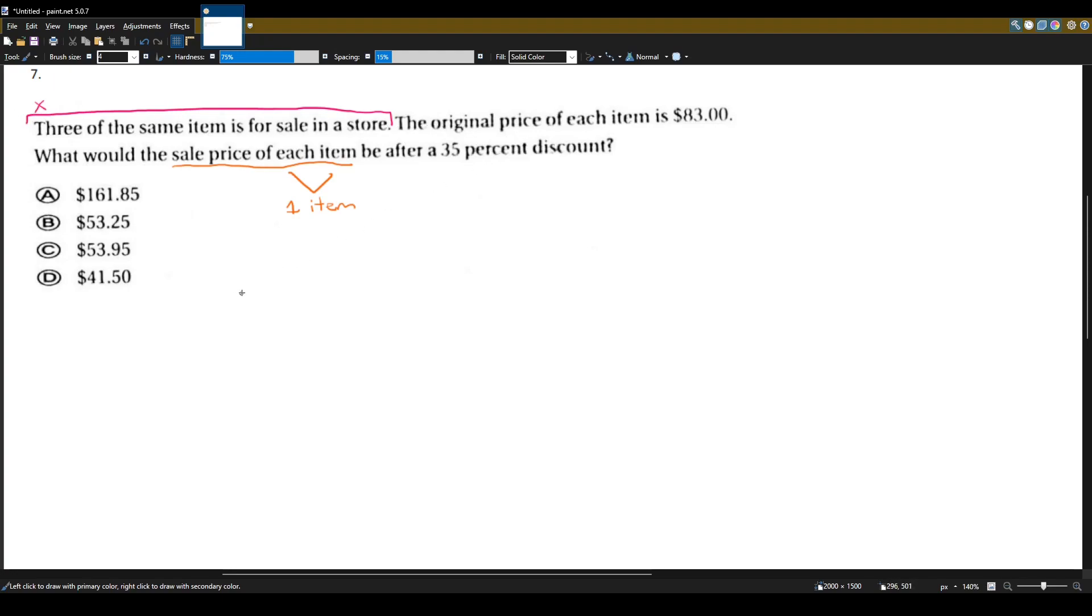So the original price, we need to know the original price. The original price of each item is $83. What would the sale price be after a 35% discount?